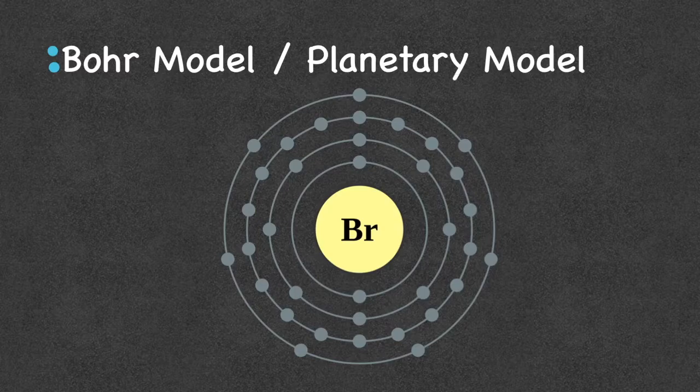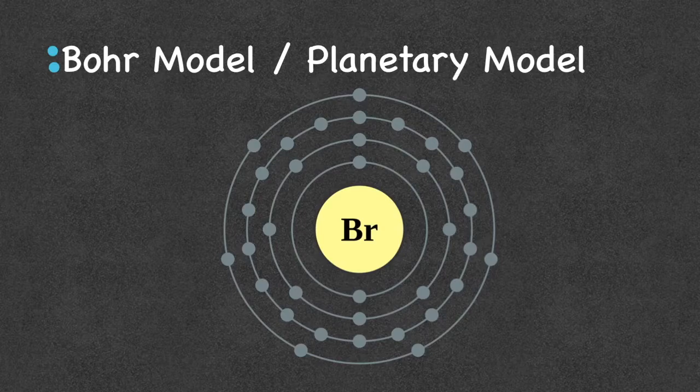When we draw models, we still draw Bohr models using the planetary model because it's easier to see. But really and truly, electrons are constantly moving very, very quickly, changing positions rapidly, and they're not really orbiting the nucleus in these clean energy levels. We now know there's a more accurate picture of a model than the Bohr model.